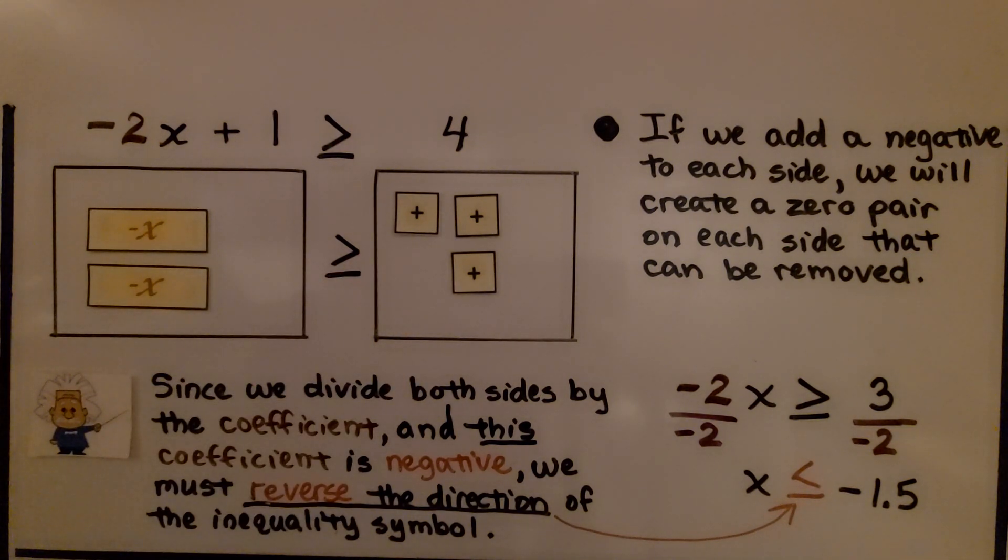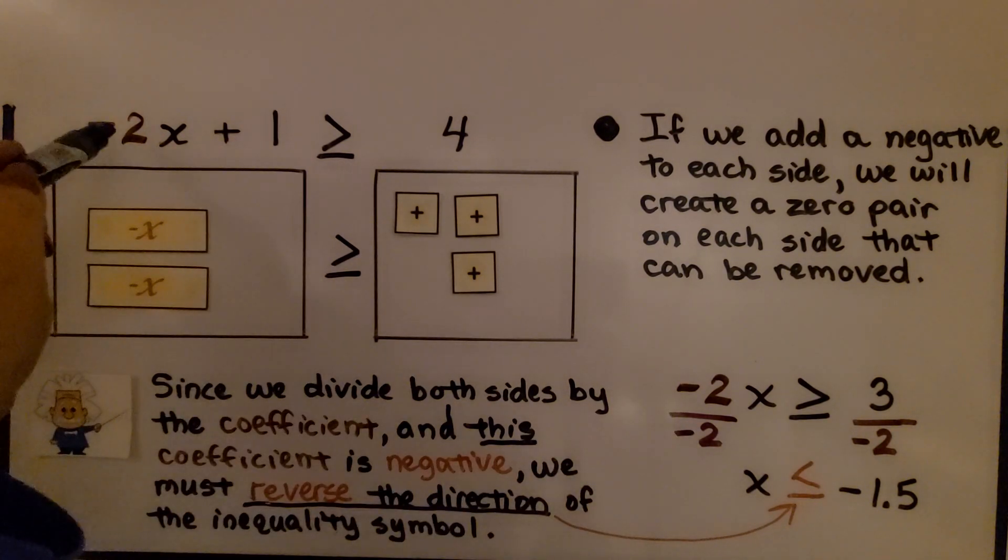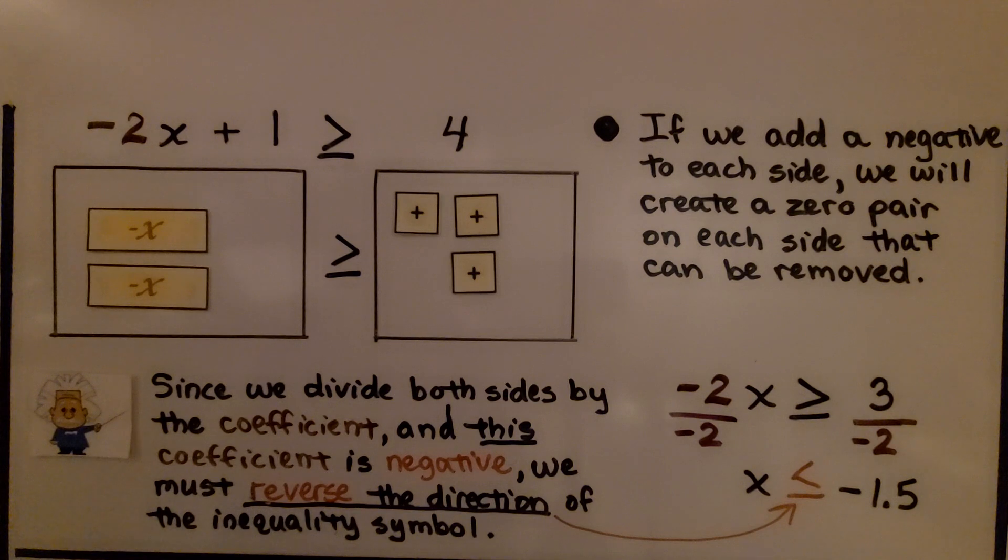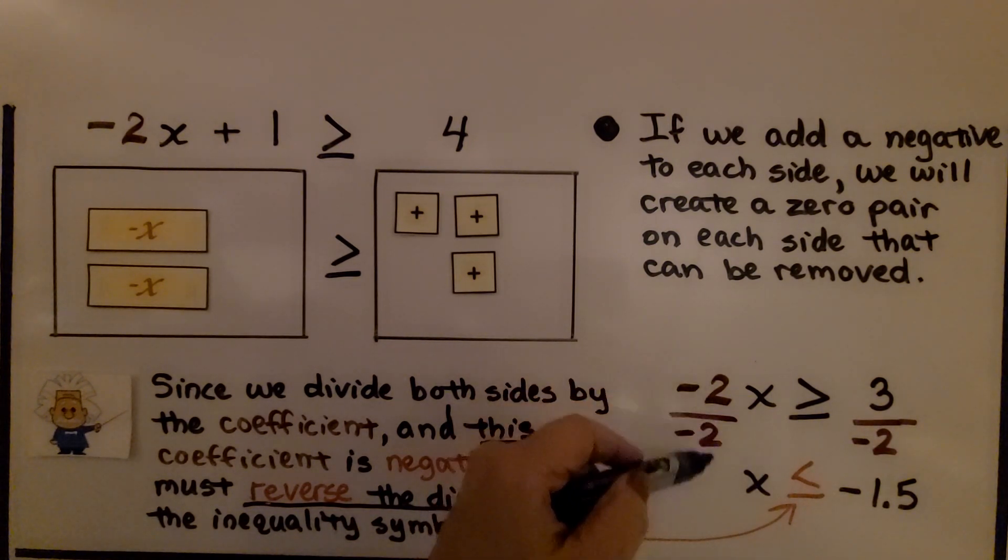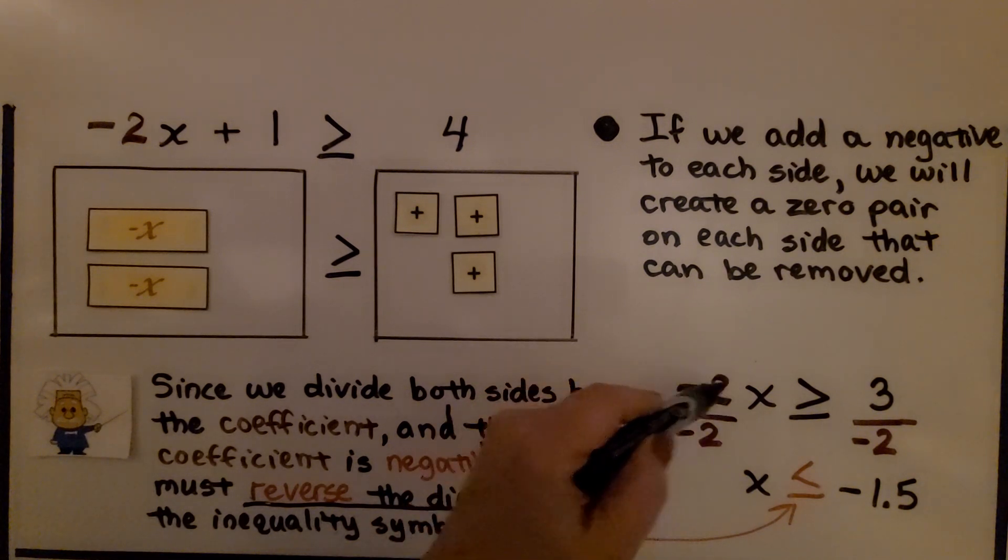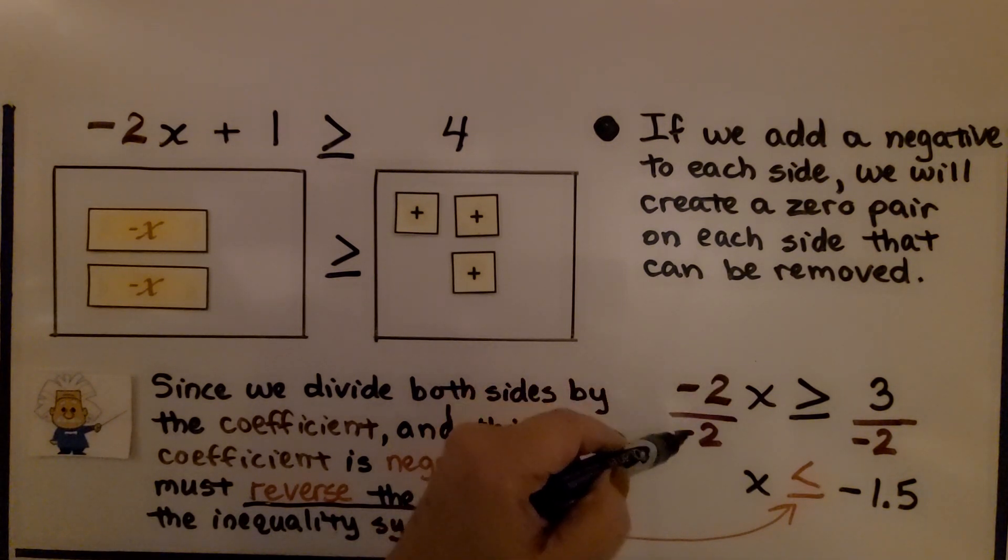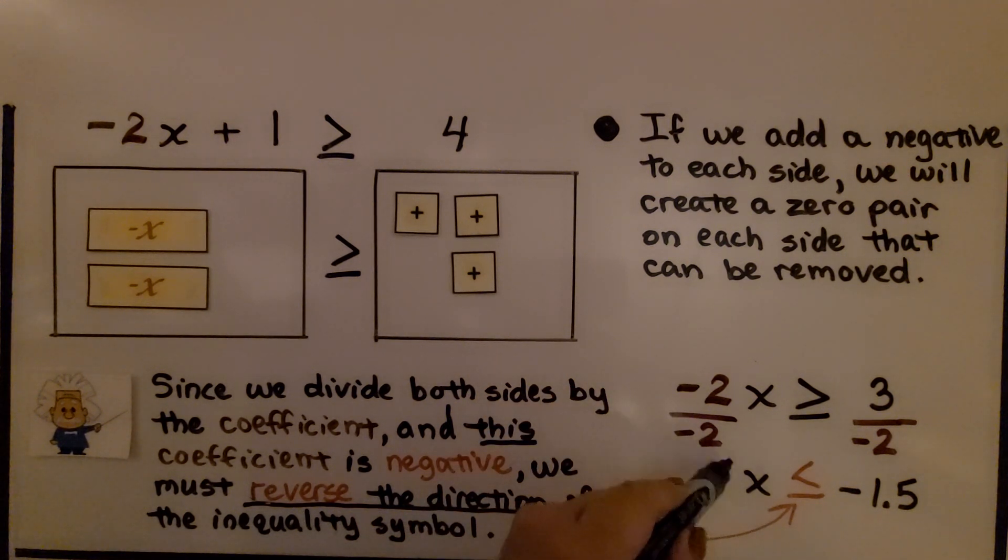Since we divide both sides by this coefficient, negative 2, and the coefficient is negative, we must reverse the direction of the inequality symbol. We divide both sides by the coefficient negative 2. We have the same numerator and denominator, so we get a 1, and it's a positive 1 because we're doing negative divided by negative, so the quotient's a positive. We have a positive 1 that we don't need to write. We just write an x for 1x.